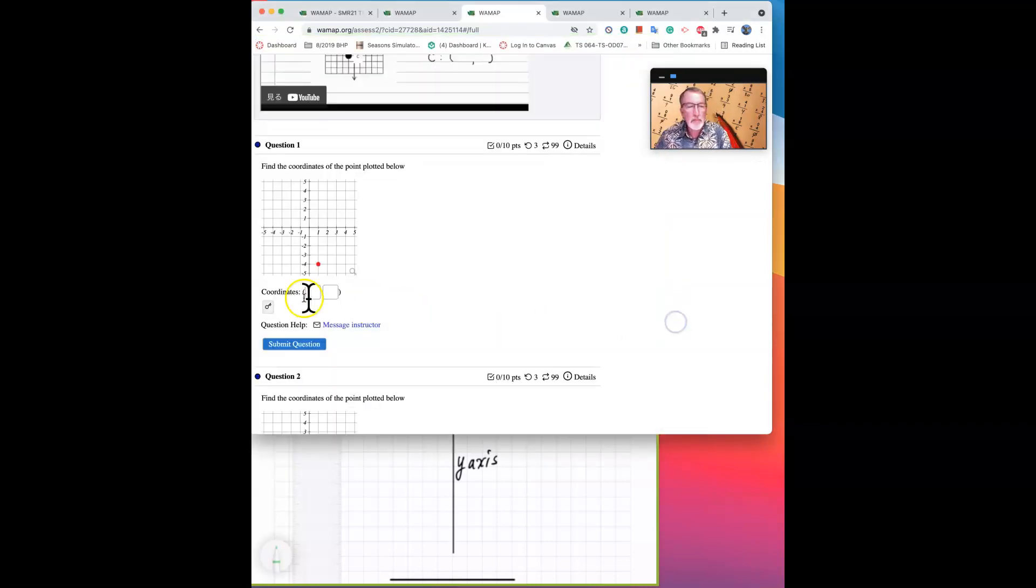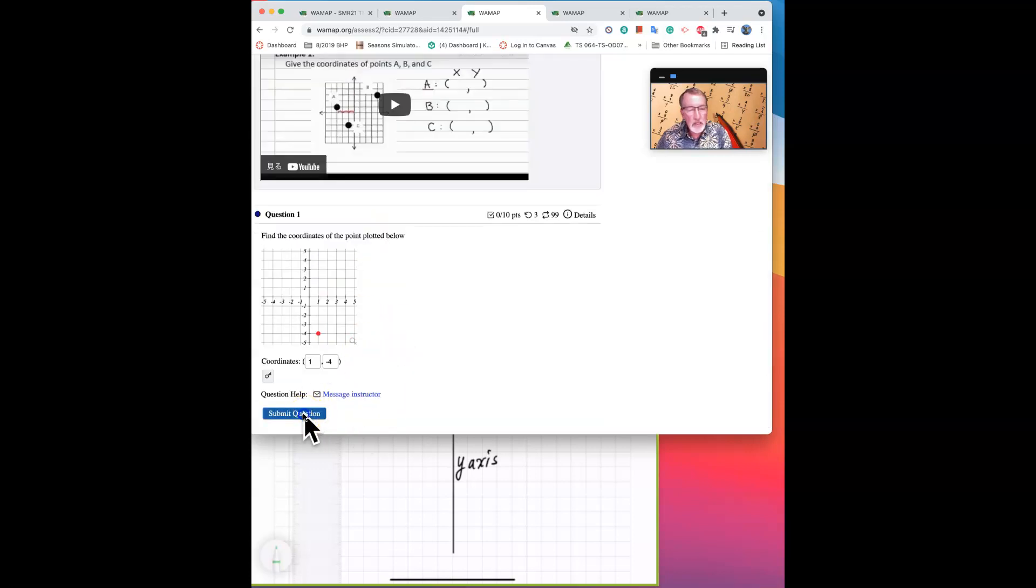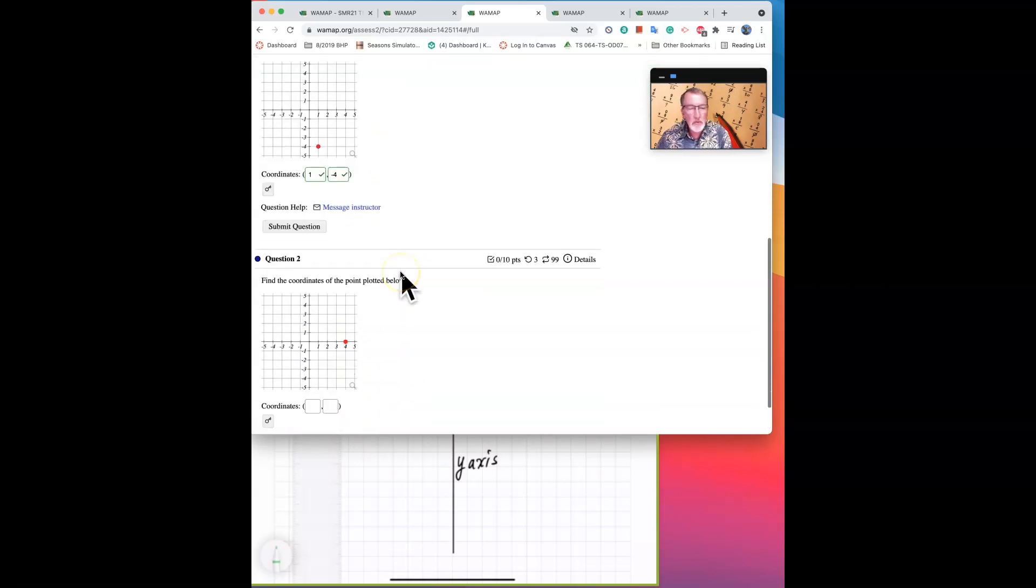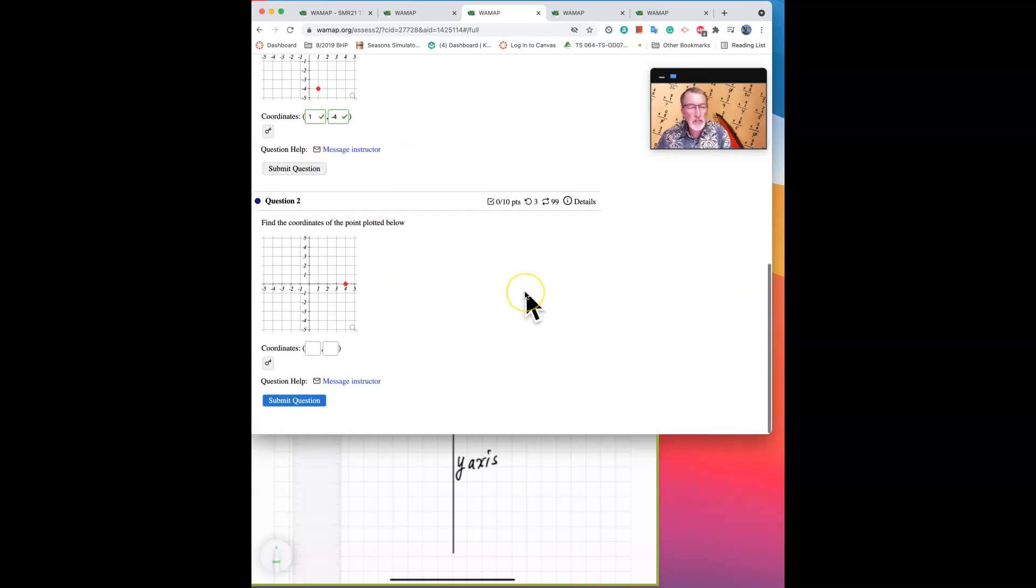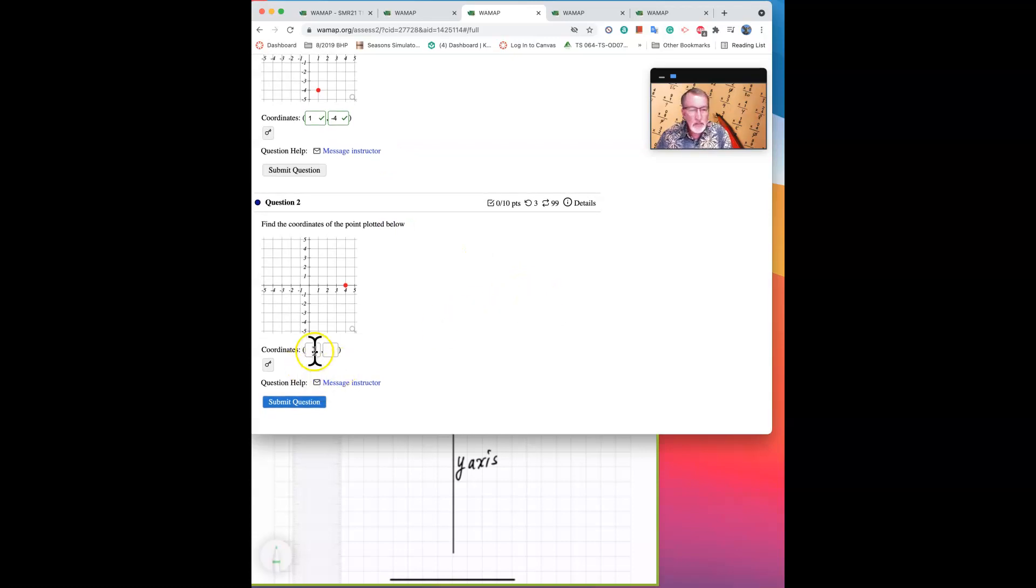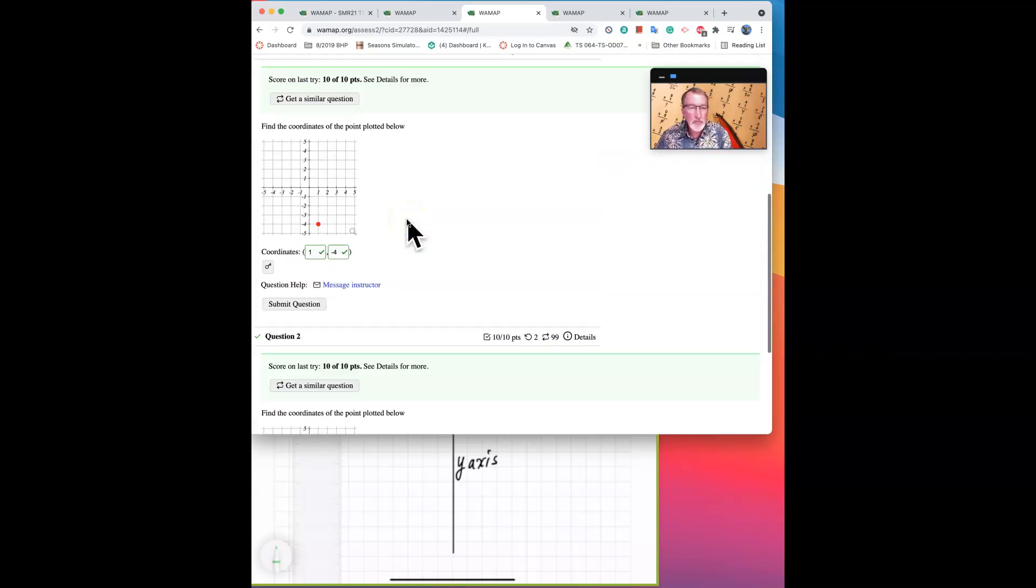Let's go back to WAMAP and see how we did. First one was 1, you can jump across using your tab button, negative 4. Let's submit the question and see how we did. Okay, we did that correctly. They marked them individually, so you can get one right and one wrong. The green one, 4 comma zero. It's right on the zero axis. This one's okay too.